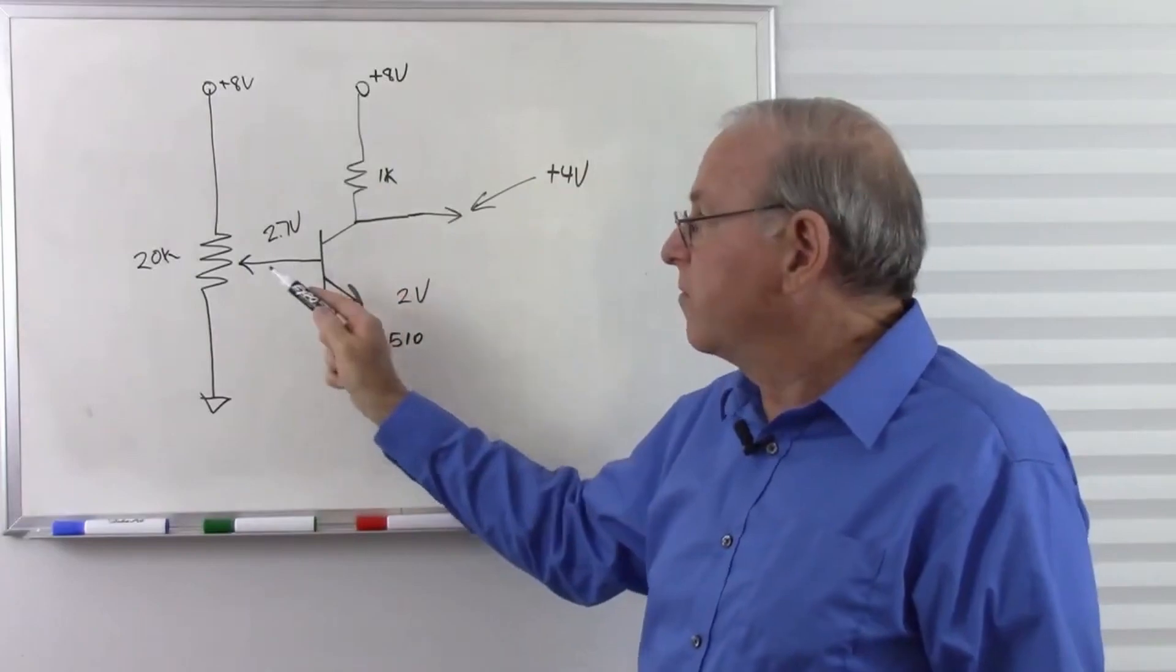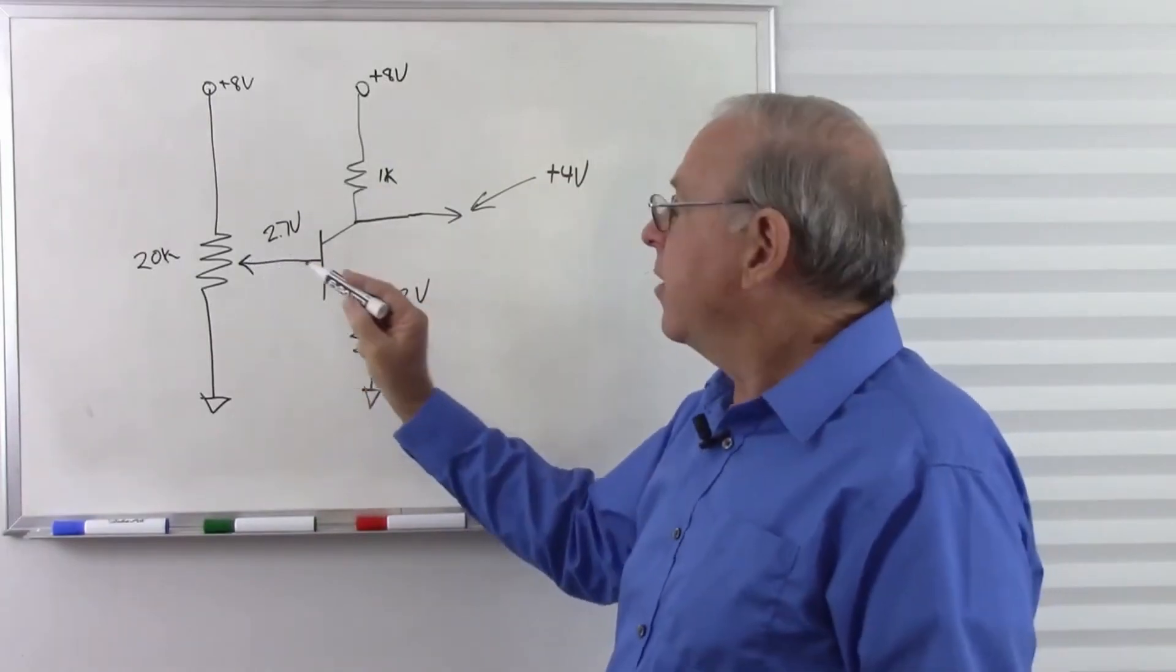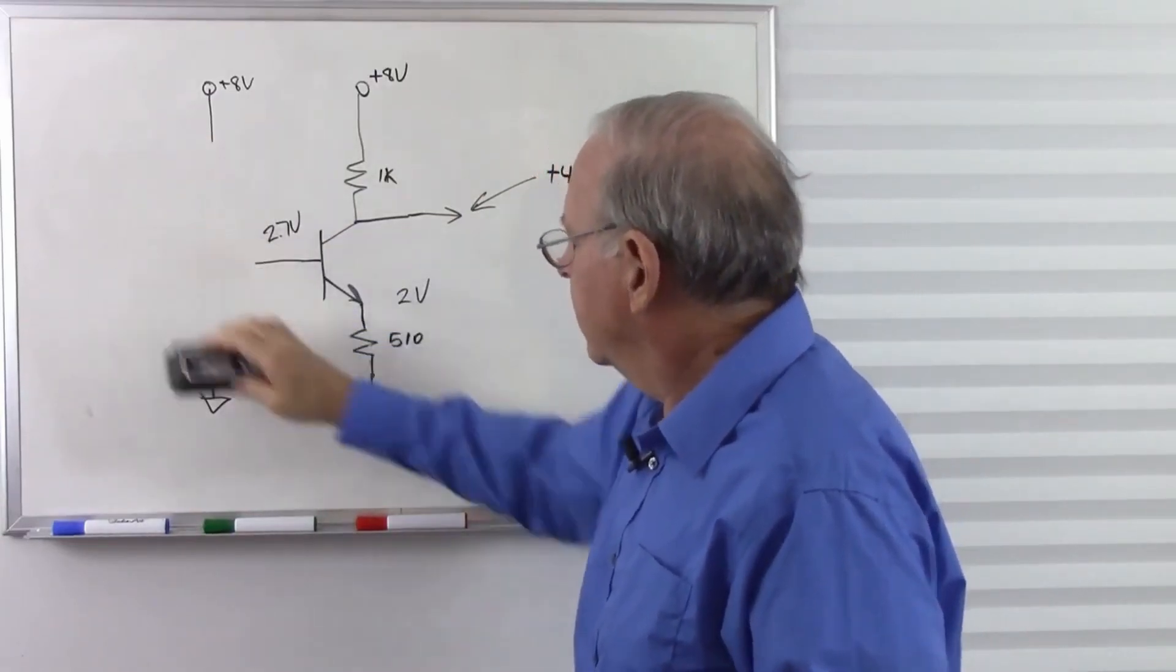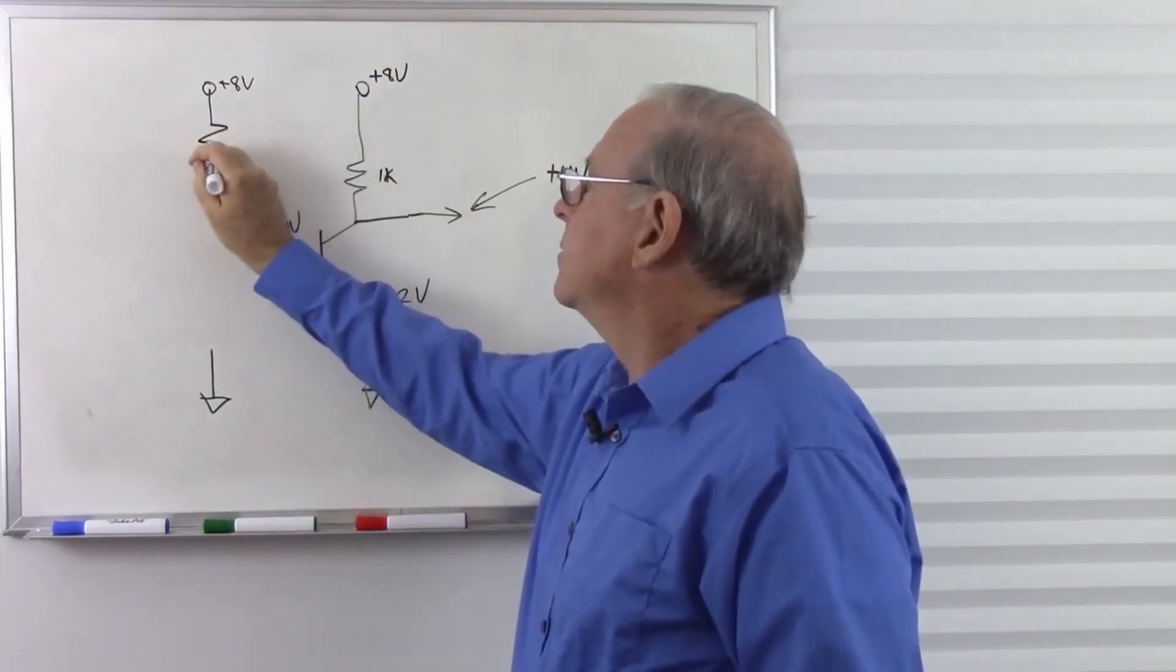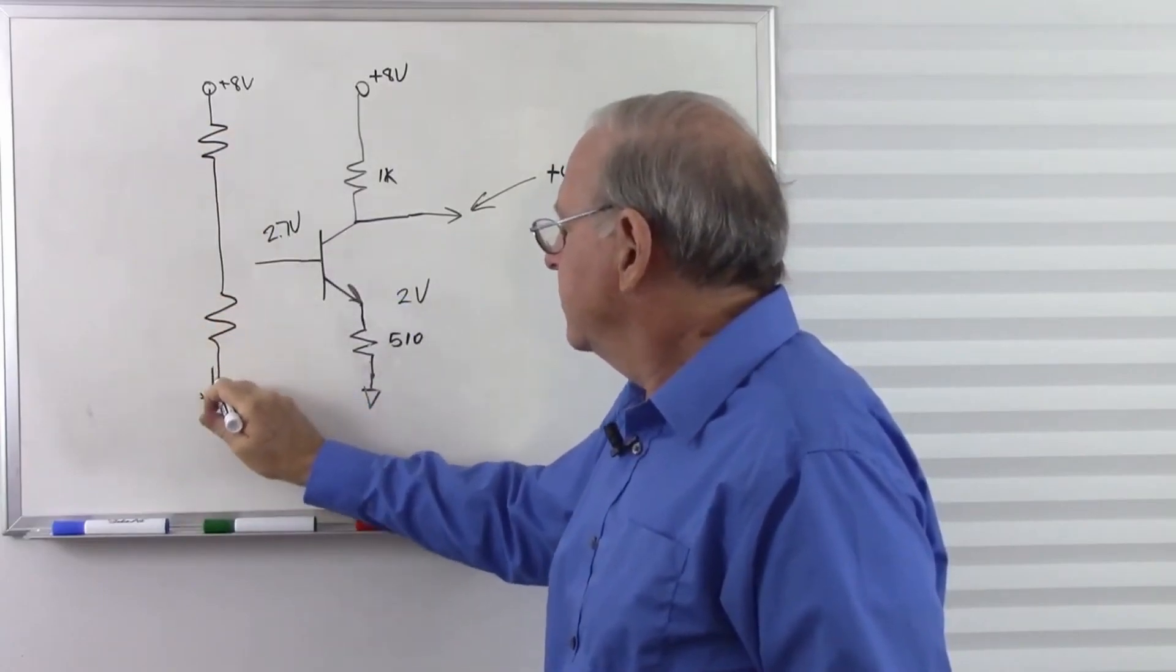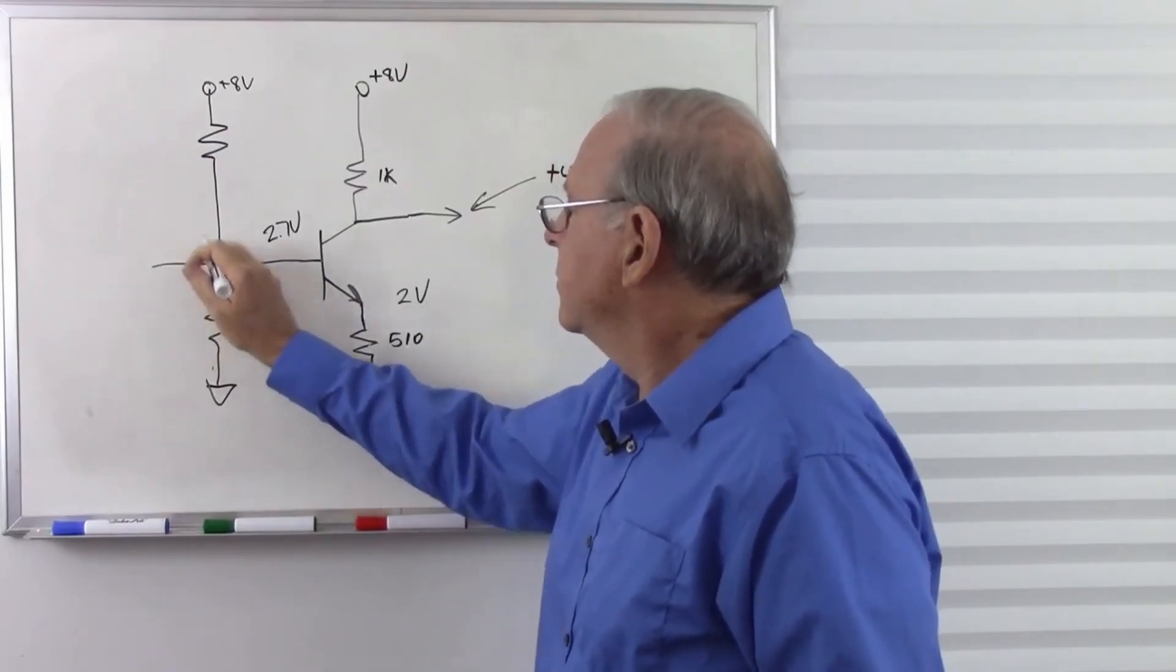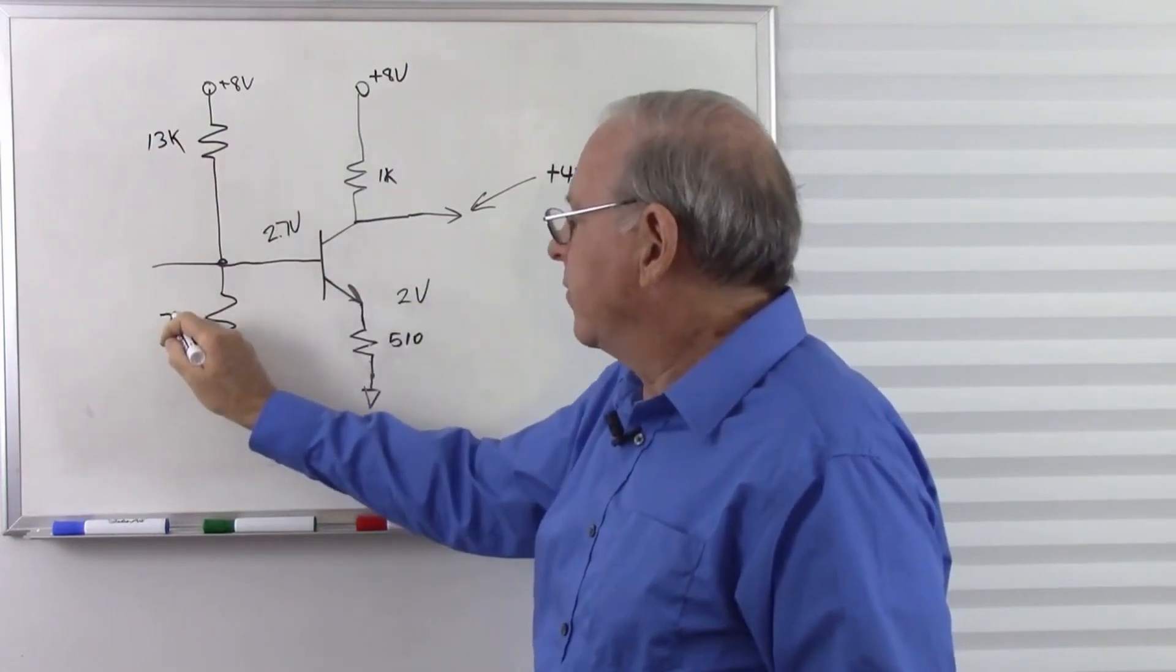Now what we want to do, just to find out what these resistors are, is simply measure this. And when I did this, I came up with, let's put the resistors back there, 13k and 7k.